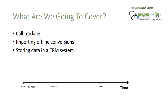There are three types of offline conversion tracking we're going to talk about today. We're going to talk about call tracking and different levels of call tracking. We're going to talk about importing offline conversions back into AdWords, and we're going to talk about storing AdWords data in your CRM system.